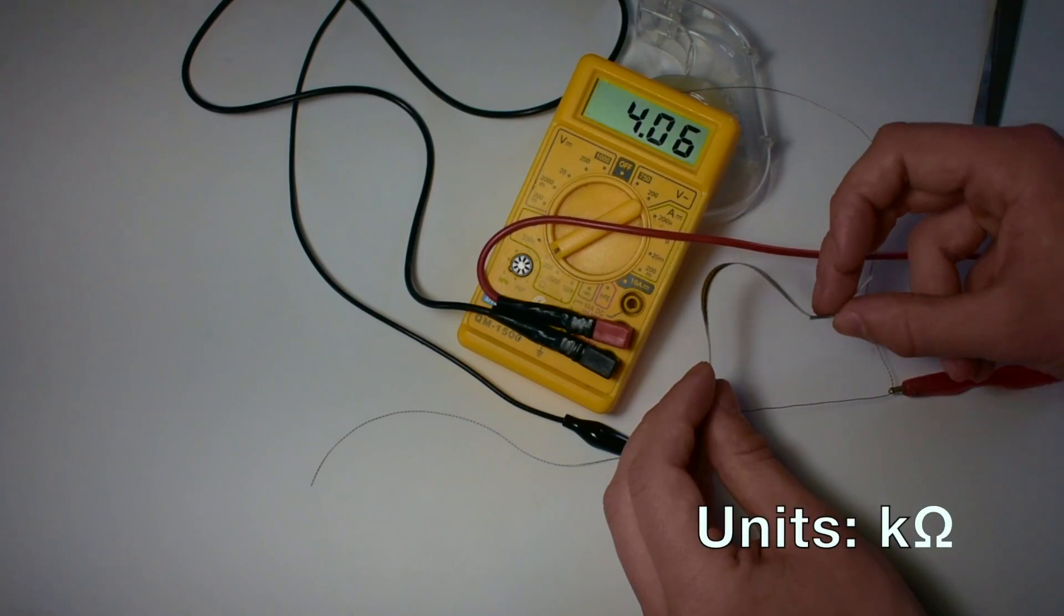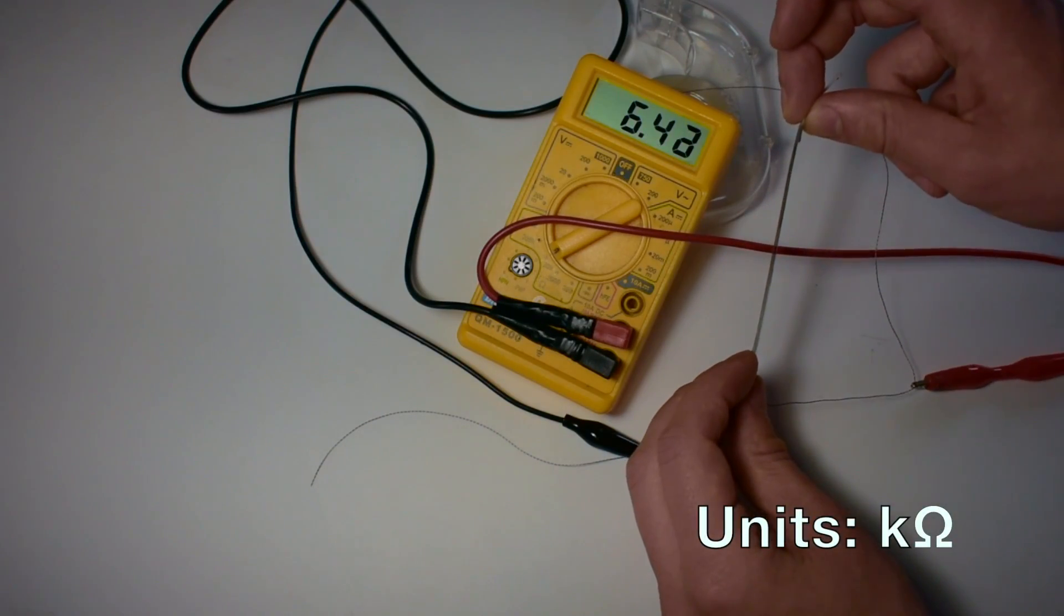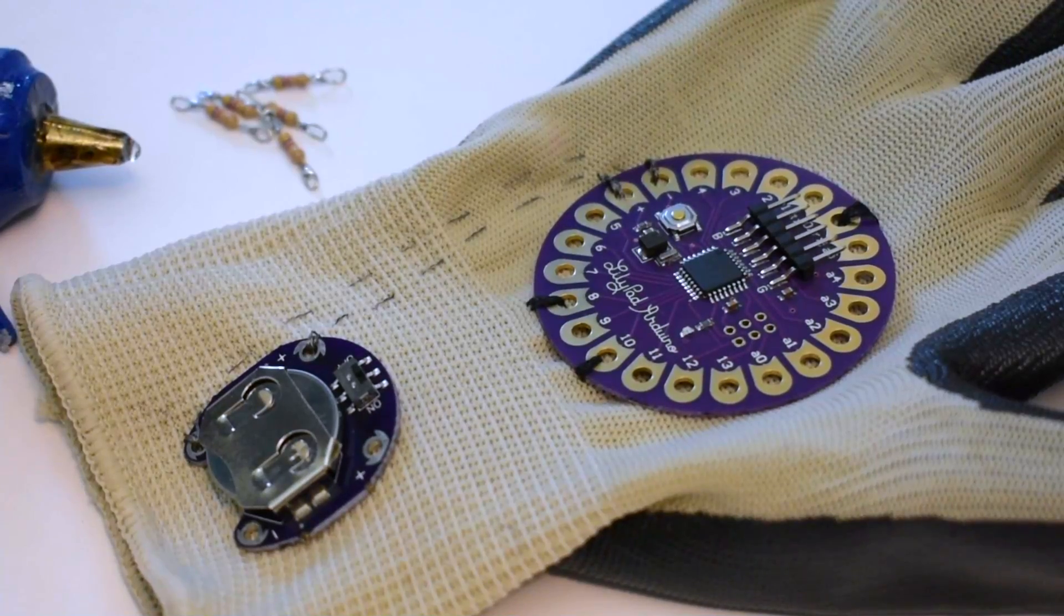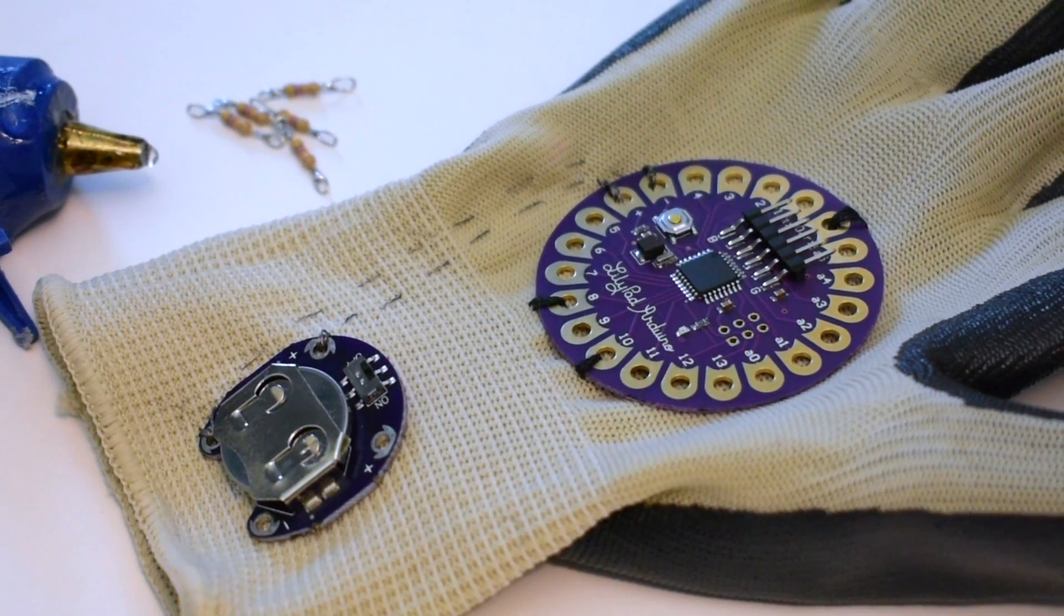Each of the five flex sensors will act as a variable resistor. I began by attaching an Arduino lily pad and a battery holder to a gardening glove using conductive sewing thread.